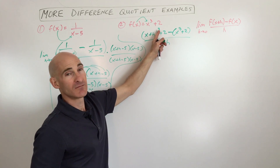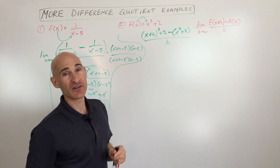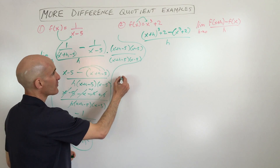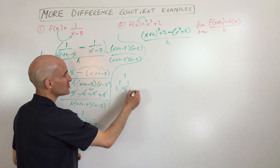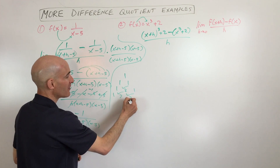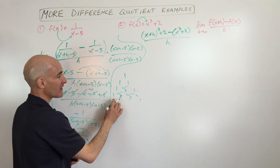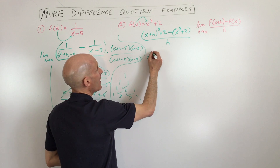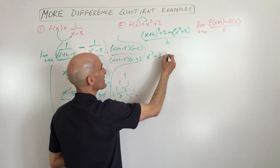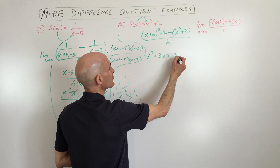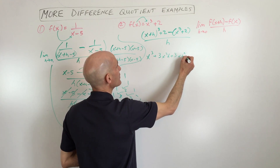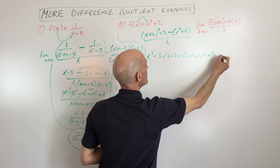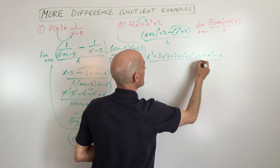Now we're going to expand (x plus h) cubed. If you remember Pascal's triangle — 1, 1, 1, 2, 1, 1, 3, 3, 1 — those are the coefficients we're going to use to expand. This is going to be x cubed plus 3x²h plus 3xh² plus h cubed, plus 2, minus x cubed minus 2. I'm just distributing the negative, all divided by h. You could also write this as (x plus h) three times, foil the first two together, then distribute, and simplify — but using Pascal's triangle is a lot faster.